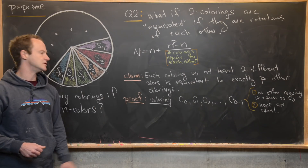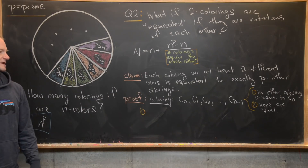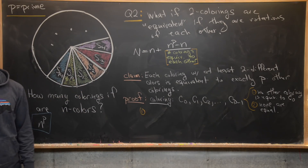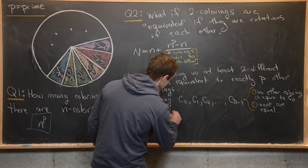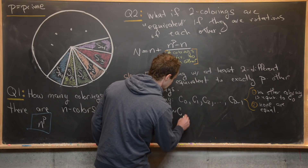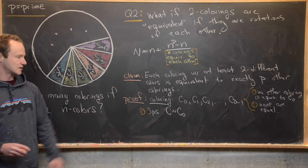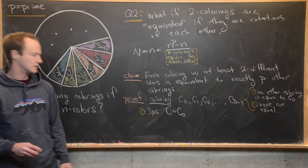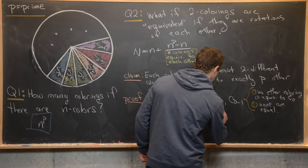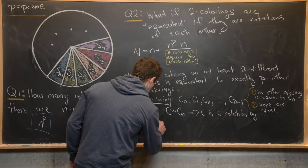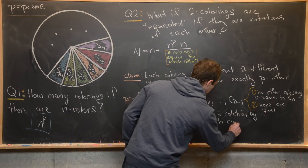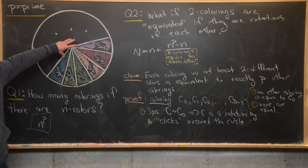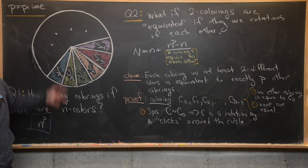So let's see how we can do this first part. For the proof, suppose that C is equivalent to C0, meaning C is a rotation by M clicks around the circle, where a click is the smallest unit of rotation — one over P times around the circle.